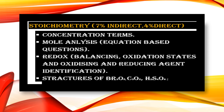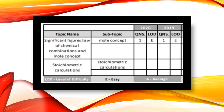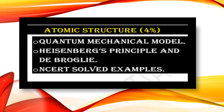Also important are structures of Cr₃O₈, C₃O₂, and H₂S₄O₆. This analysis is based on NTA 2019 and 2020 data. In 2020 they asked a question on significant figures, law of chemical combination, and mole concept. The same subtopics were also tested in 2019.